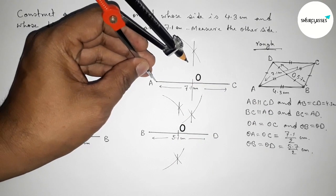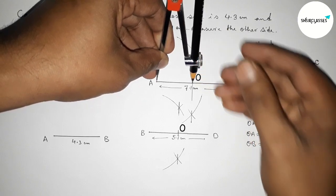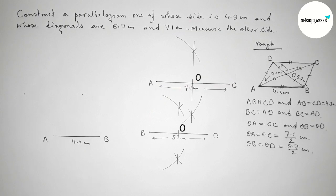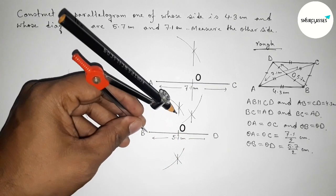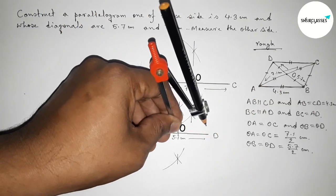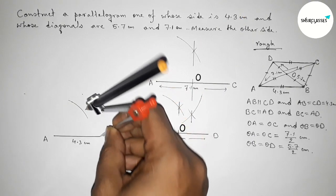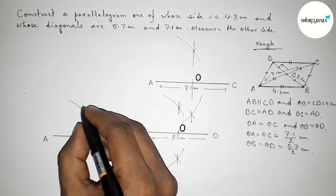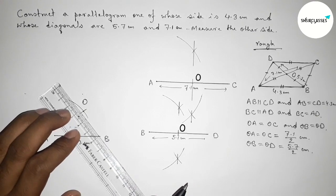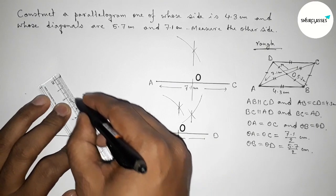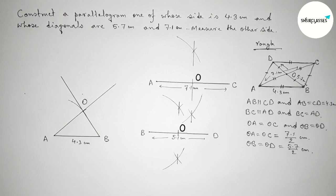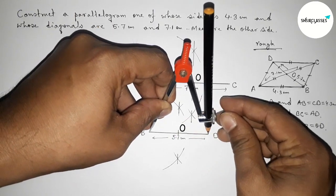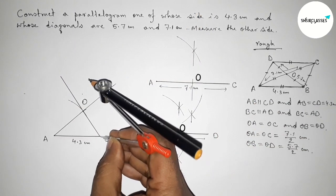Now taking the length OA, which equals OC — checking this and it is perfectly equal. Putting the compass on point A and drawing an arc. Now taking the length OB, which equals OD — checking this, perfectly equal. Putting the compass on point B and cutting here, so both arcs intersect at point O. Joining BO and extending this line, and similarly joining AO and extending it.